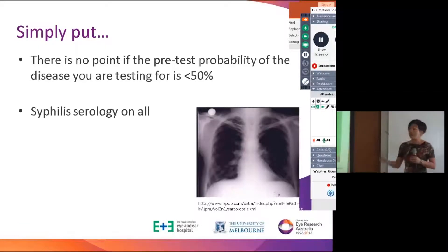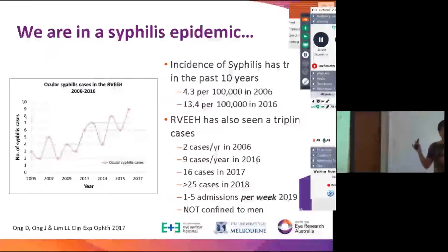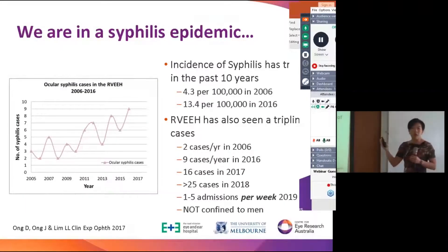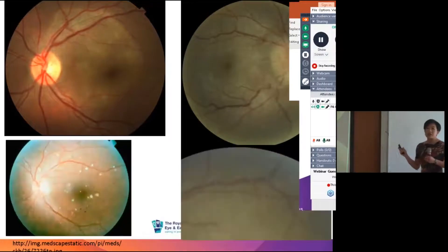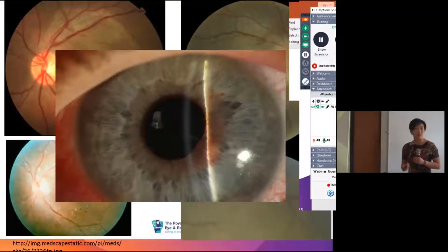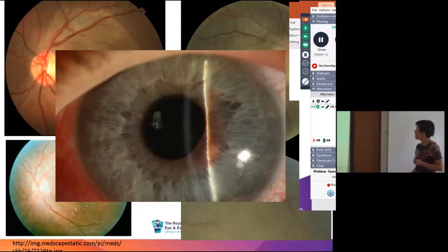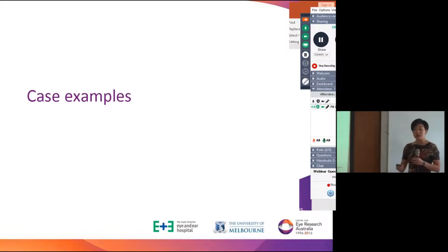Having said that, we do syphilis serology in everybody because worldwide we are in a syphilis epidemic — rates are increasing globally. Syphilis is the great mimicker in uveitis; it can present in any way. At my hospital, we are getting one admission per week for syphilis. I'll now go through some cases, as that's the easiest way to think about how to manage and work up patients.